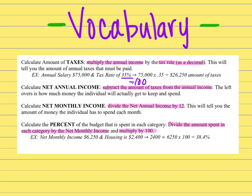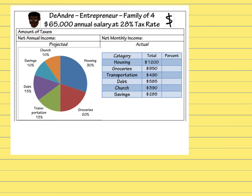Now let's look at an example. DeAndre is an entrepreneur with a family of four. His annual salary is $65,000 and his tax rate is 28%. First, we need to calculate his actual taxes in dollars — we know the percentage, but now we need to find it in just dollars.